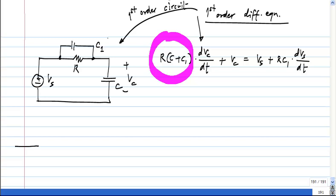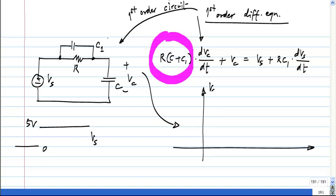Let us say Vs is a step that goes from maybe 0 to 5 volts. What does Vc look like? So Vs goes from 0 to 5 volts, what will Vc look like? Vc of 0 is 0, this capacitor has a 0 initial condition.